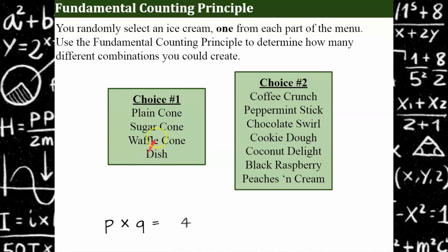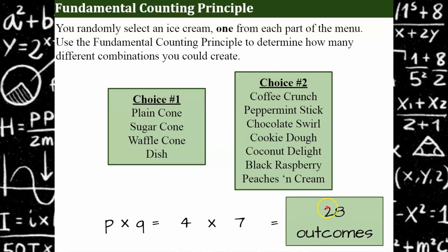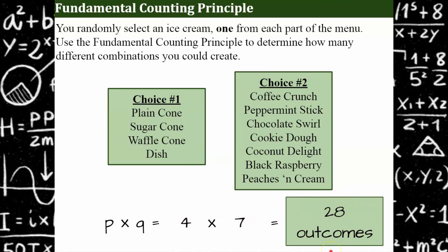We can calculate the sample space using our fundamental counting principle. The number of p, which is our first choice, is four; then our second choice, we have seven different selections. We multiply them together and discover there are 28 outcomes — our sample space has 28 different items. It could be plain cone coffee crunch, plain cone peppermint stick, plain cone chocolate swirl, and so on for each of the seven flavors, then again for sugar cone, waffle cone, and dish. Four times seven gives a sample space with 28 different outcomes.